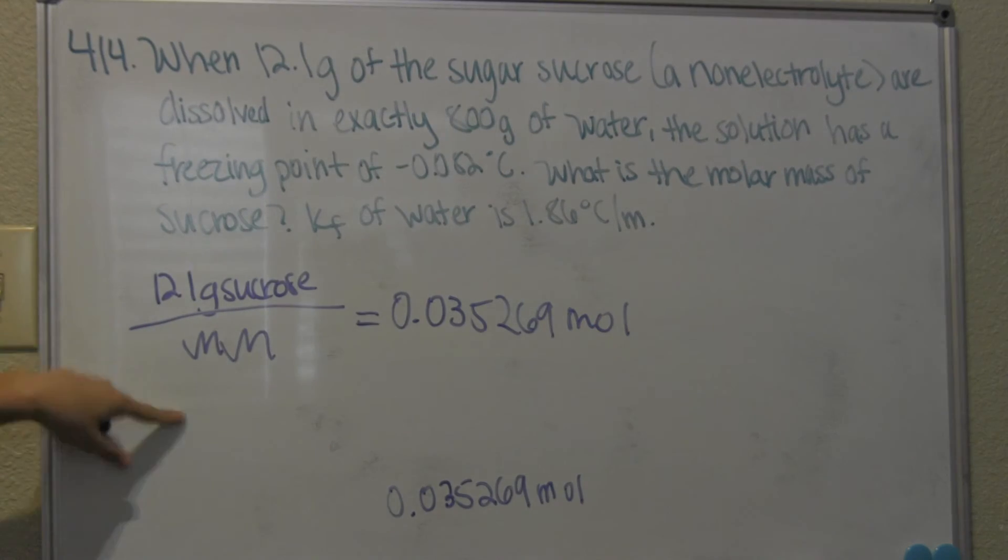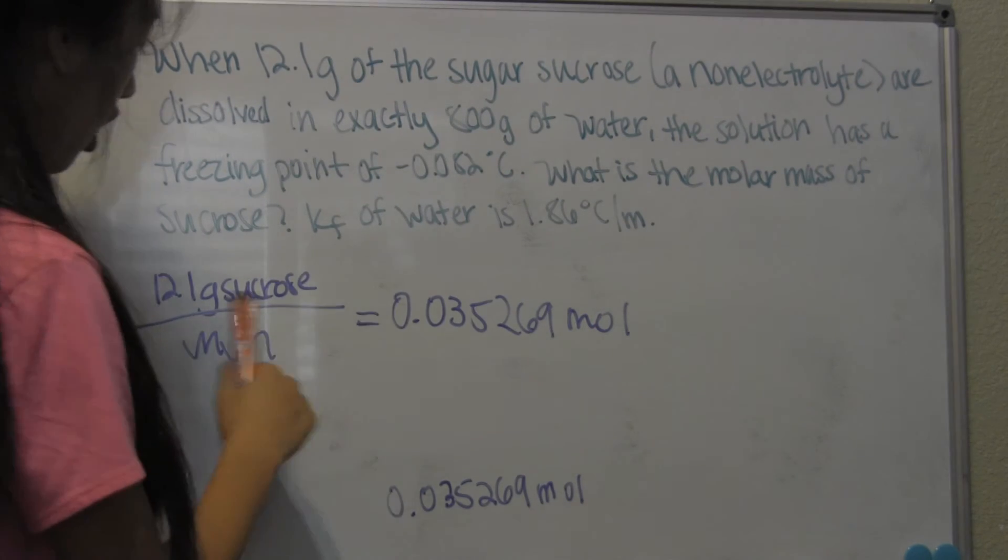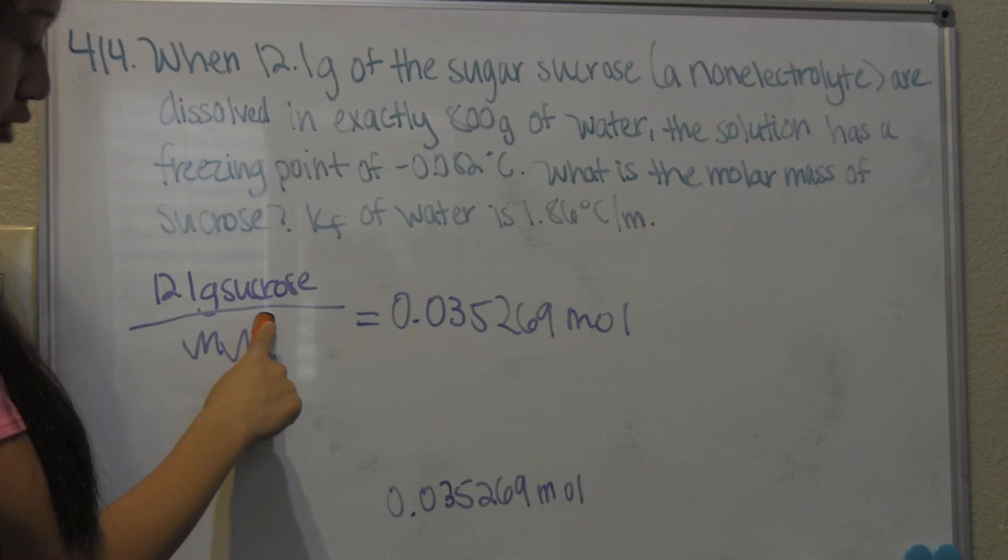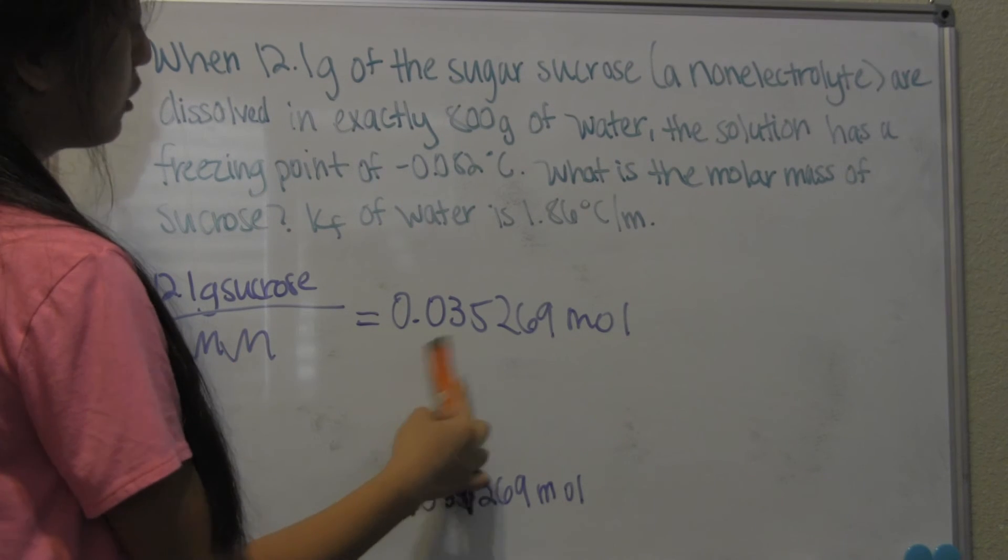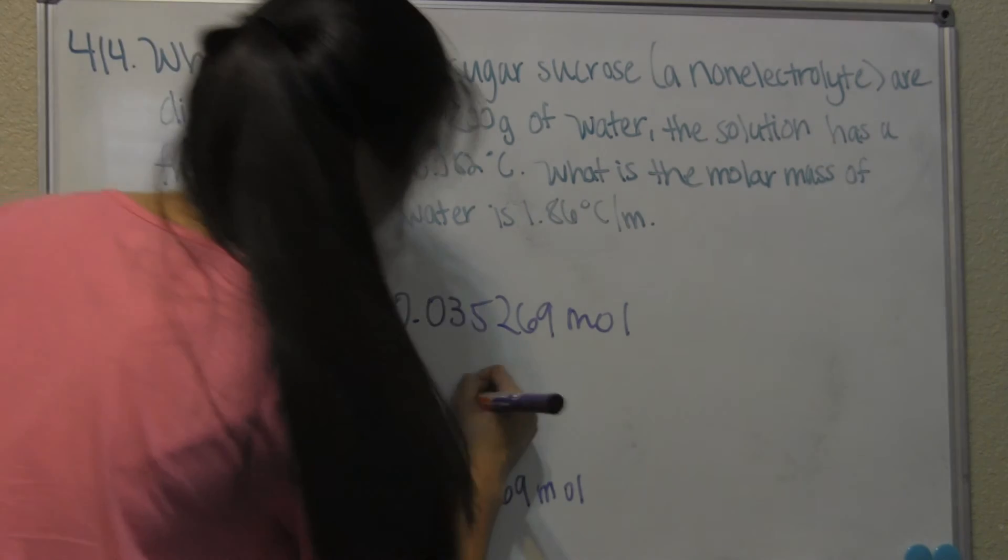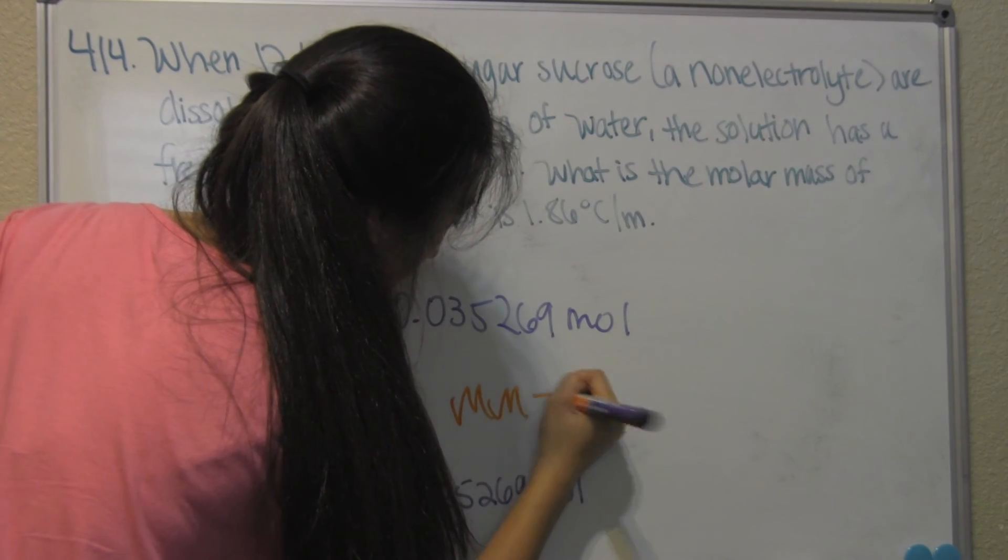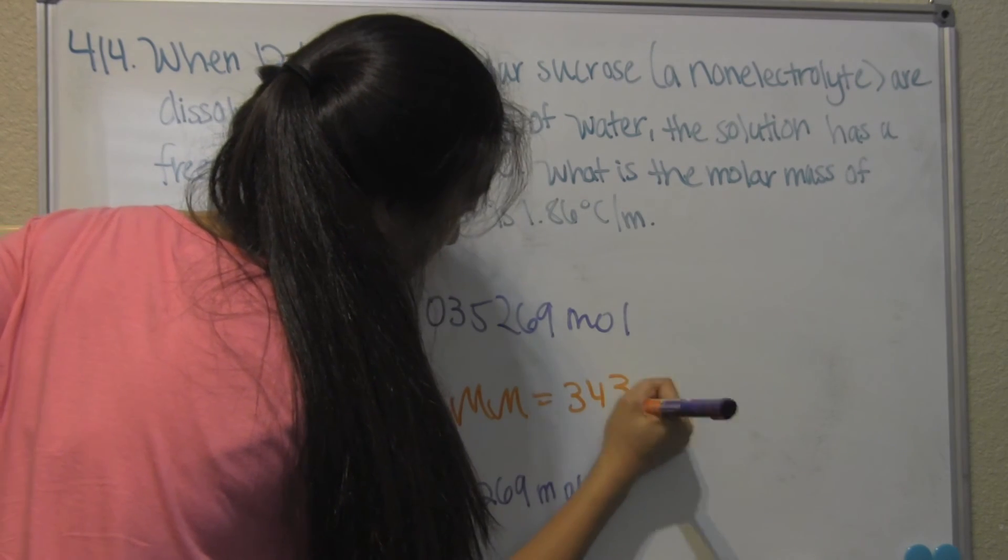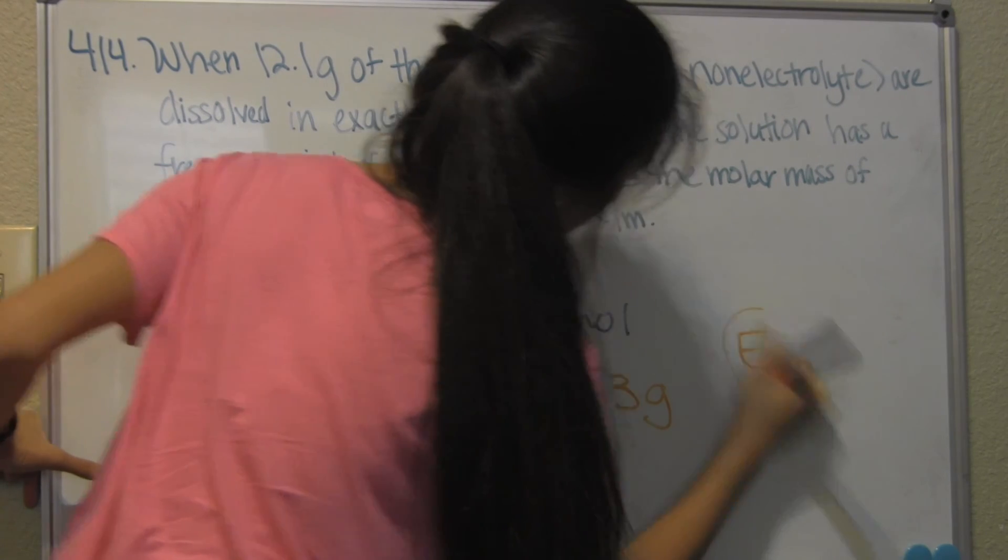And if you manipulate this whole thing to get molar mass, all you have to do is divide the 12.1 grams of sucrose by 0.035269 moles. And you end up getting a molar mass of 343 grams, which is letter choice E.